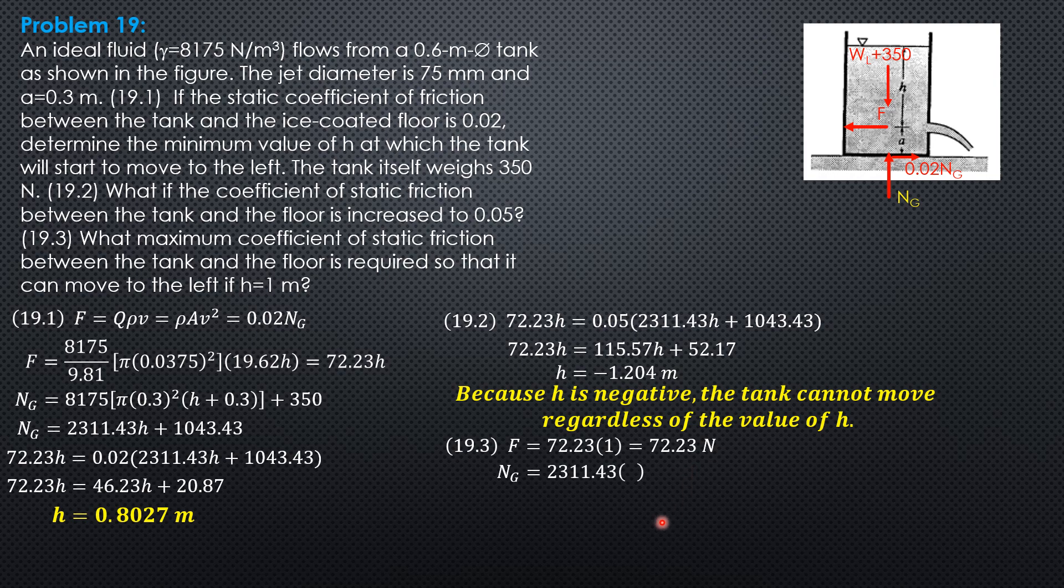NG is 2311.43H times 1 plus 1043.43. So NG is 3354.86. So μ should be less than 0.02153 so that the tank can move to the left.